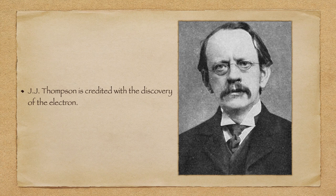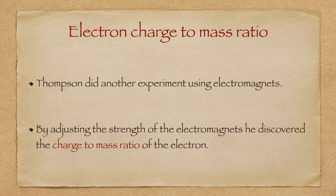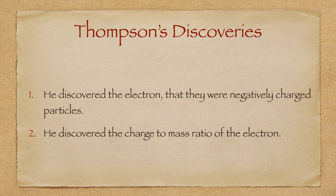Thomson is credited with the electron discovery. He continued his studies on electrons using electromagnets, adjusting their strength to find the charge-to-mass ratio of the electron. It is very important that you state in an exam that Thomson found the charge-to-mass ratio, as he did not discover the mass of the electron nor the charge of the electron. Thomson made two discoveries: that cathode rays had a negative charge, and the charge-to-mass ratio of an electron.